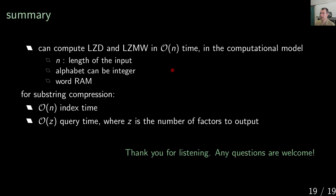In summary, we have shown that we can compute the LZD and LZMW factorizations in linear time. The computation model has n as the length of input, and the alphabet can be an integer alphabet — so it is independent of alphabet size — using the word RAM model. For substring compression, you build the same data structures, keep them in memory, and answer each query in O(z) time where z is the number of factors to output. Thank you for listening — questions are welcome.